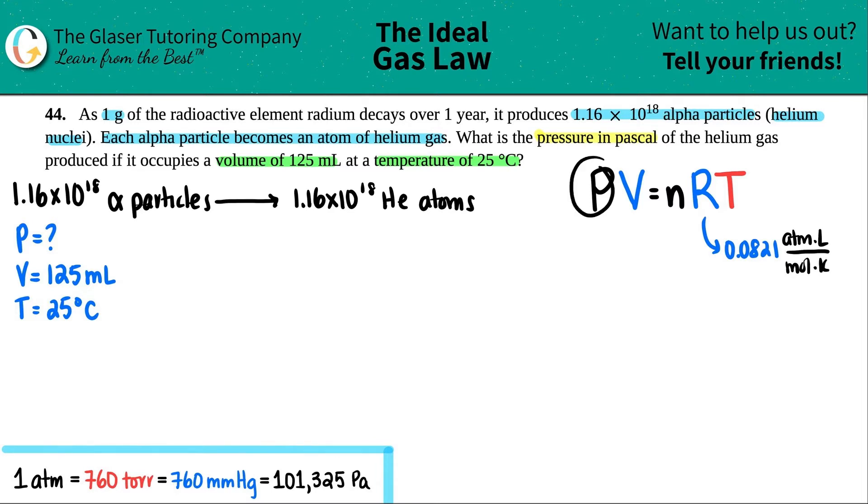The units for r is atm times liter divided by mole times Kelvin. So that's why all of these are locked into place. So the pressure, you have to get it into atm. But we need to solve for the pressure, so that's okay. So if we want to solve for p, that means I should know volume, number of moles, r, and the temperature.